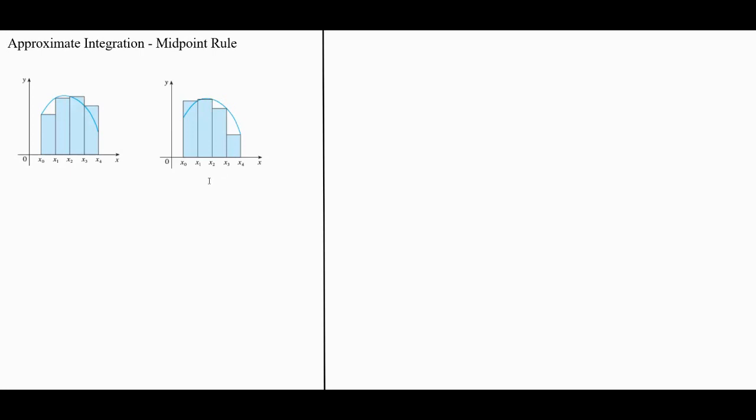The whole idea of approximate integrals is to try to calculate this area in a smarter way, which is more efficient, uses less points, and of course has less error as well. One smart way to do this is instead of taking these end points, in other words, either the left point or the right point.